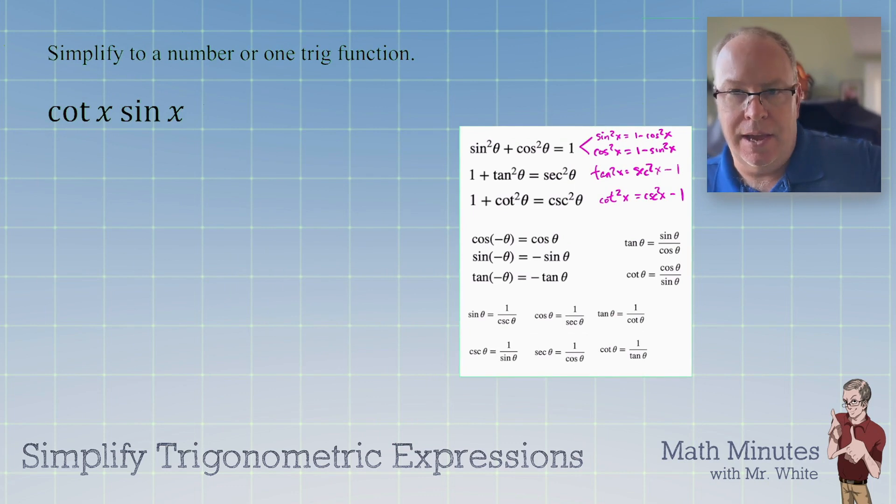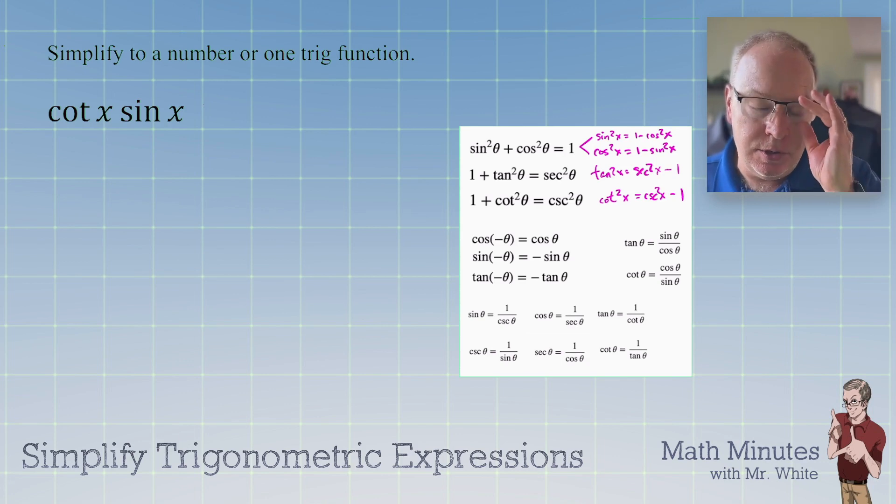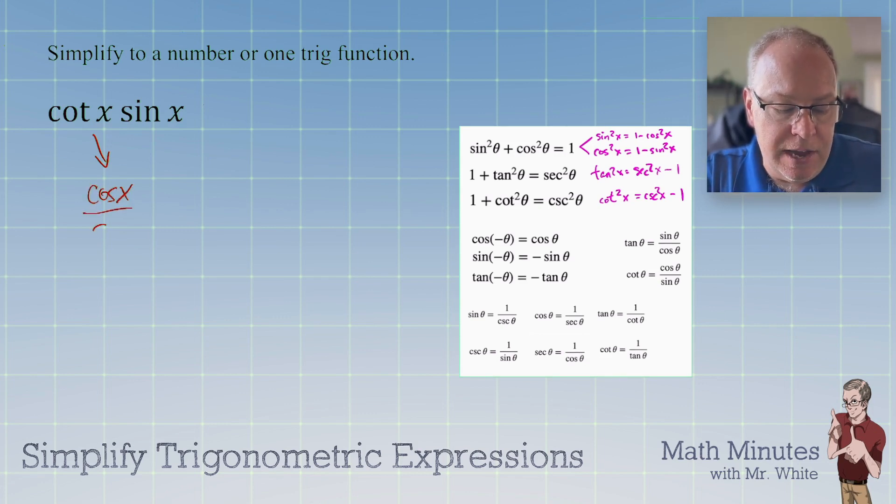Cotangent times sine. So I imagine you're wondering where to go, right? Well, maybe, you know, maybe your teacher told you one strategy is to convert everything to sines and cosines and just see what cancels, what happens. So we said a moment ago that cot = cos/sin.